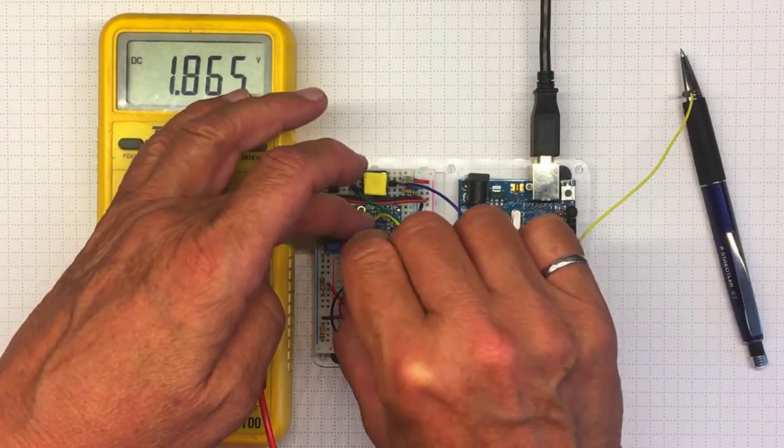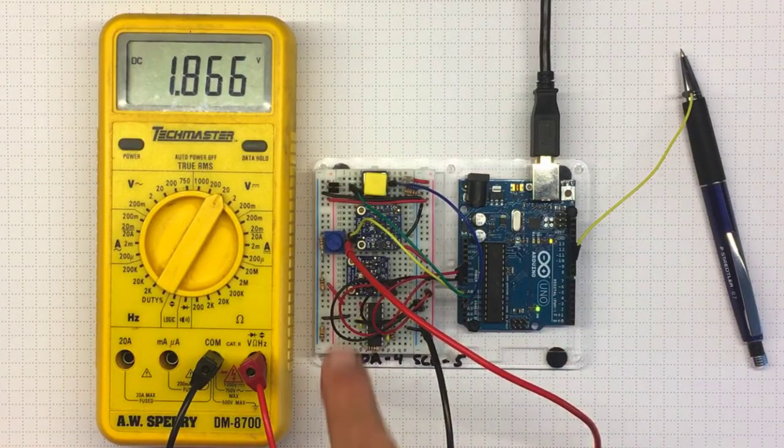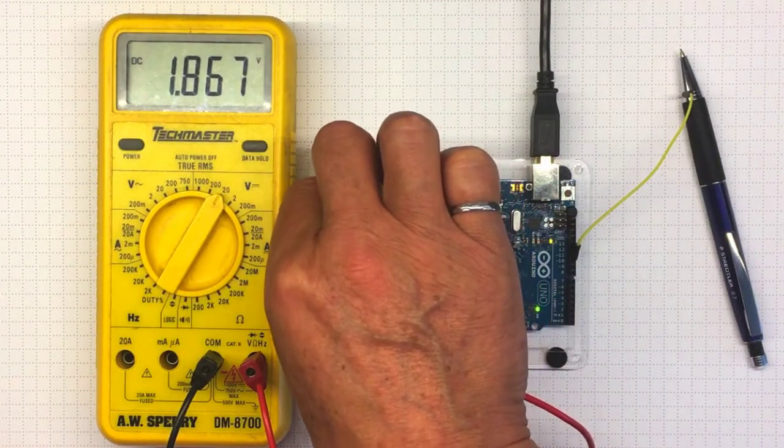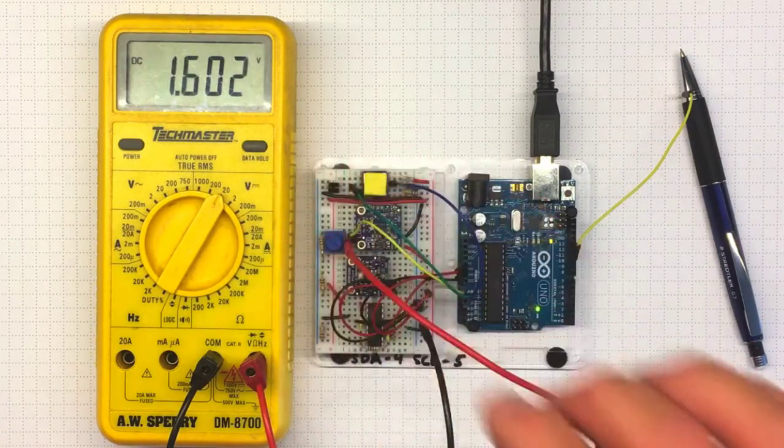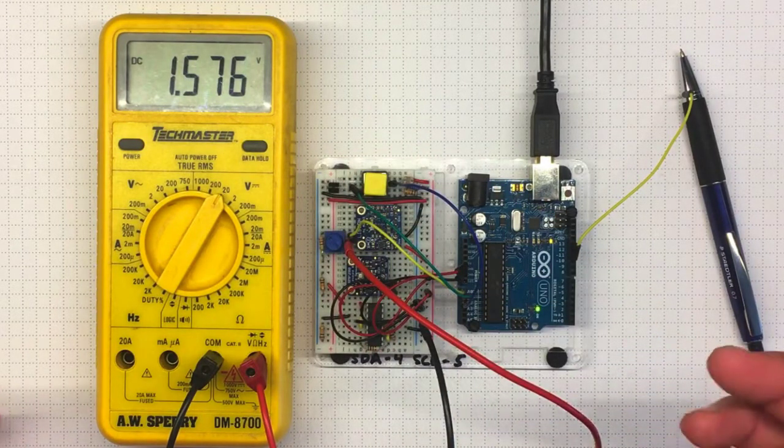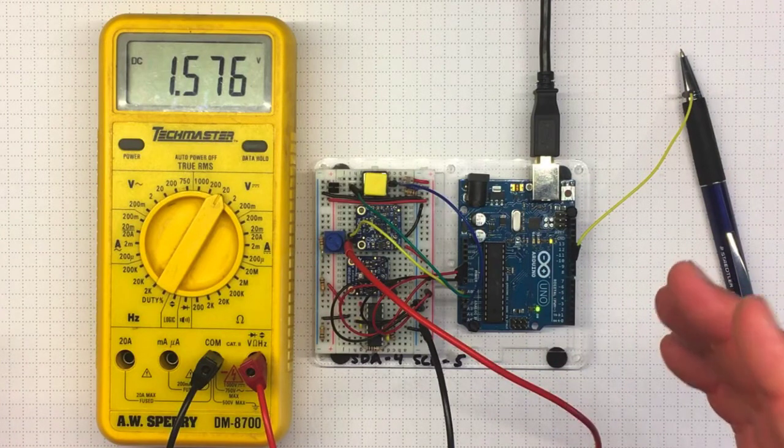For an analog signal, I've got this potentiometer and it gives me a voltage output that I can adjust and vary depending on what I'd like to get. So I can get values anywhere from zero up to five and anything in between.